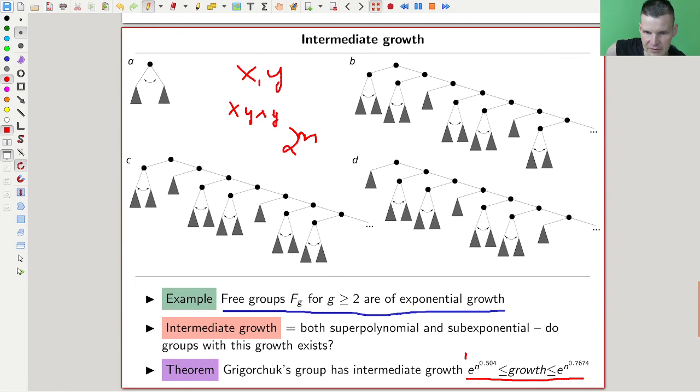So here is rough, this one here is roughly the famous e to the square root of n, which is one of the famous conjectural lower bounds for growth in this case, and here whatever, e to the n to the 0.7 subseconds. So it's of sub-exponential growth, but still much faster than any type of polynomial growth.